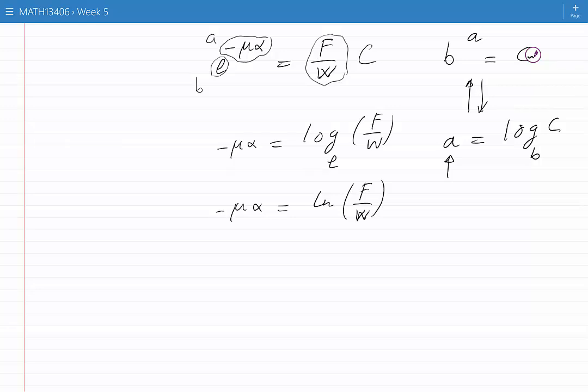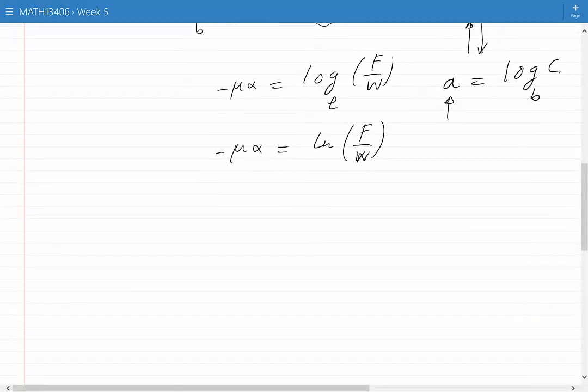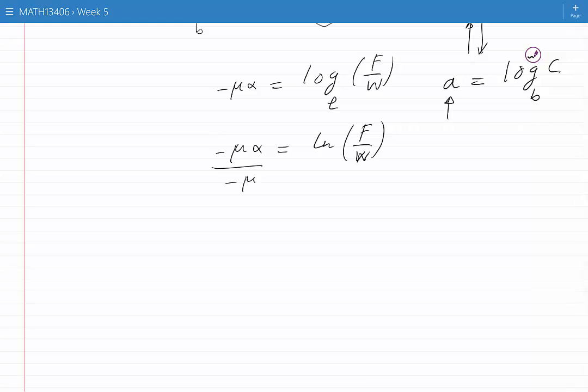Now to isolate alpha, we divide both sides by minus mu, and we get alpha is equal to minus 1 over mu ln of F over W.